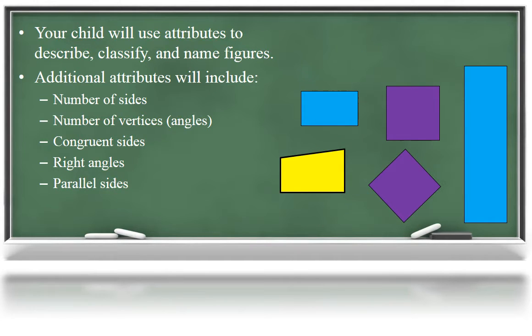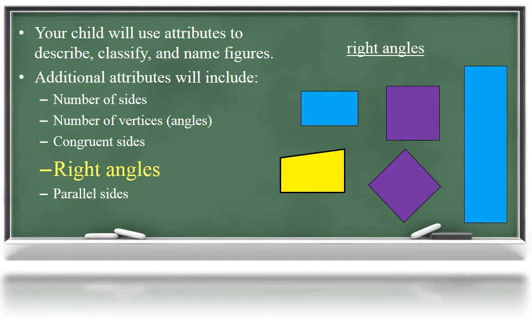Your child will also look for right angles in shapes. Third graders do not have to measure angles. The only angle your child will need to know in third grade is a right angle. Some children may even name these square angles. All of these quadrilaterals have right angles. What do the blue and purple shapes have in common? All of their angles are right angles.